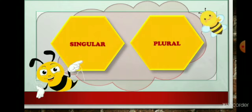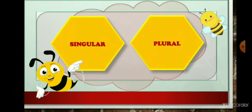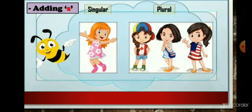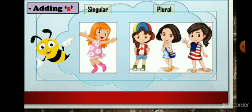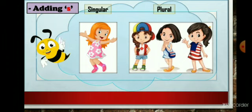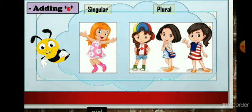Now, let us understand singular and plural nouns. Dear all, as we know that common nouns are words that we use to describe types of person, animal, place and things. So, when we wish to refer to more than one noun, we use its plural form. Let's see.